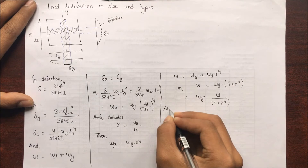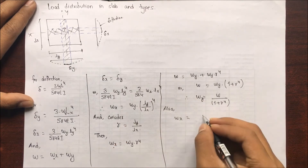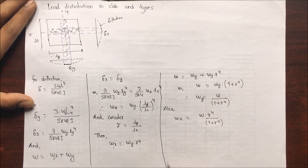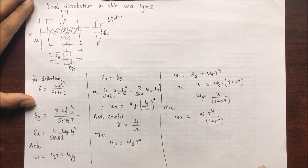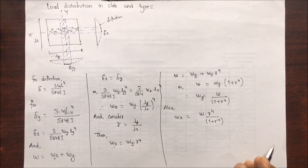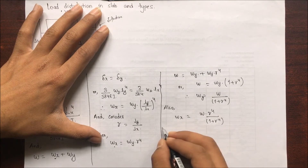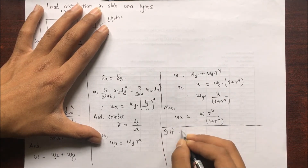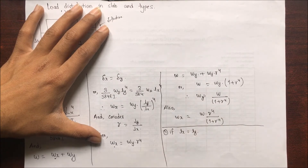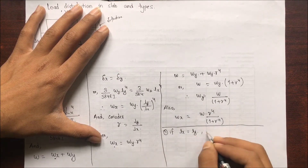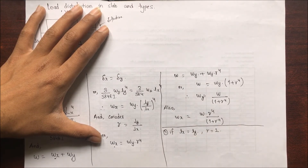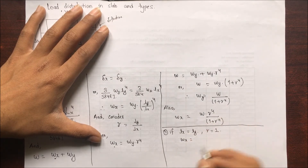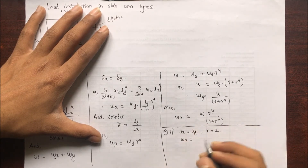wx is obtained by substituting the value from the above equation. Now if Lx equals Ly, then r equals 1, so wx = w / (1 + 1) = 0.5w, and wy = 0.5w as well.